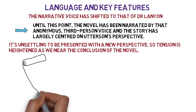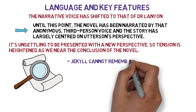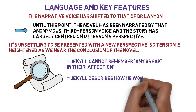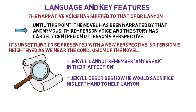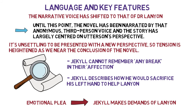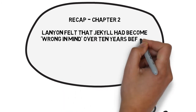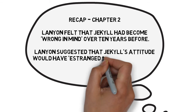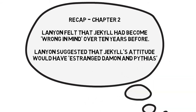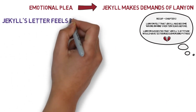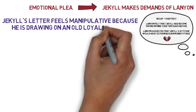Let us now turn to Jekyll's letter. Jekyll starts by declaring to Lanyon that he cannot remember any break in their affection, and describes how he would sacrifice his left hand to help Lanyon, such are the depths of their friendship. The letter then springboards from this emotional plea into clear demands of Lanyon, and despite the opening of the letter, we get the sense that Jekyll is perhaps taking advantage of Lanyon's good nature. In chapter 2, we learnt that Lanyon felt Jekyll had become wrong in mind over ten years before, and Lanyon suggested that Jekyll's attitude would have estranged Daemon and Pythias — the epitome of a loyal friendship in Greek legends. So although Jekyll claims in this letter that they only differ on scientific questions, it seems that Lanyon's memories differ, making Jekyll's letter feel manipulative, drawing on an old loyalty which was perhaps lost long ago.